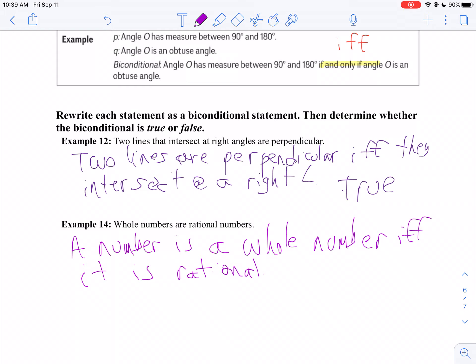How about backwards? If a number is rational, must it be a whole number? No. That one is false.